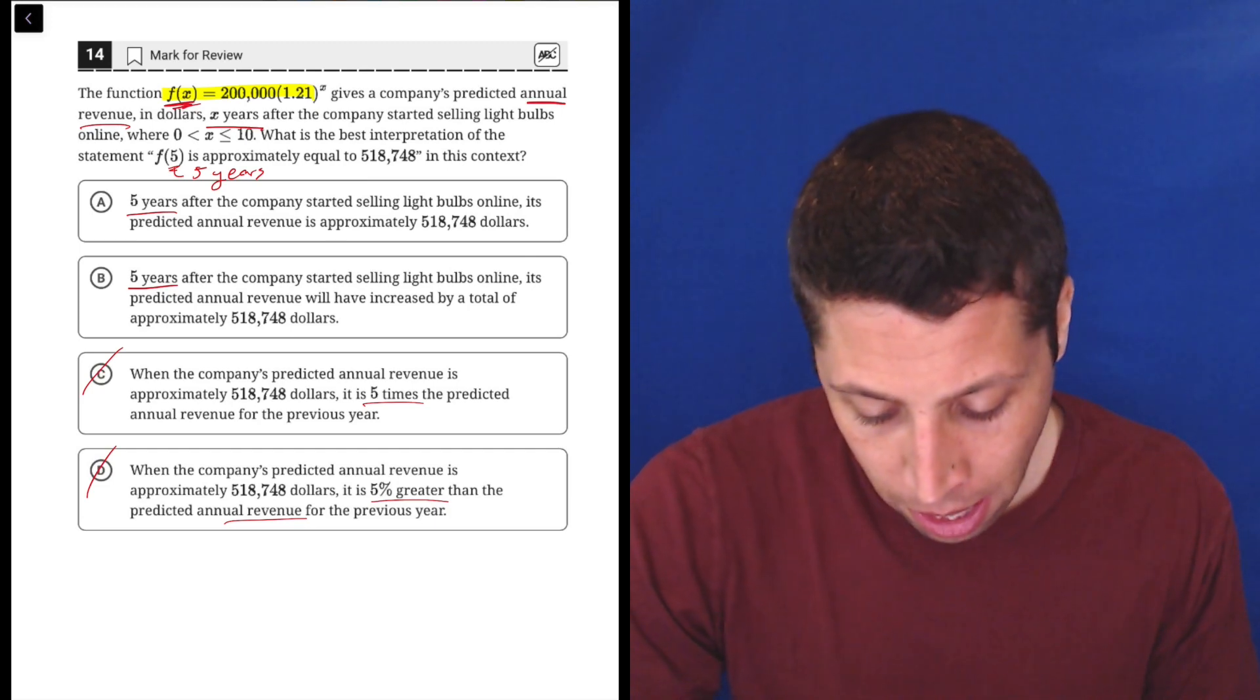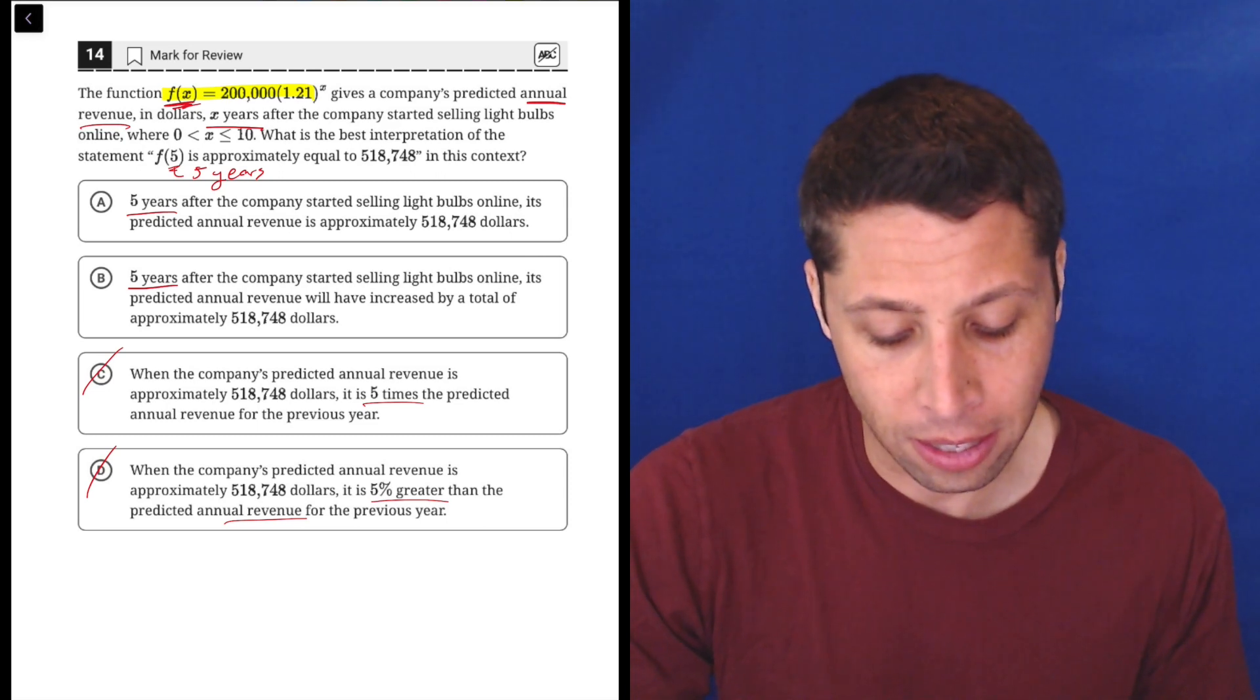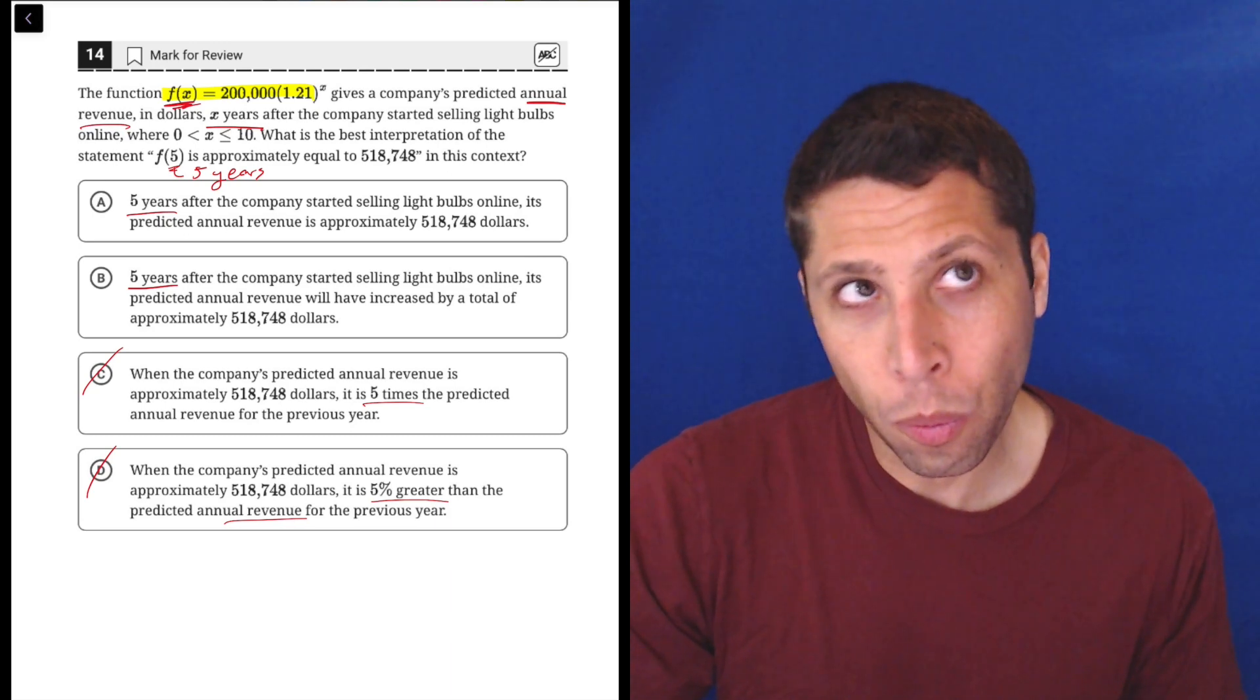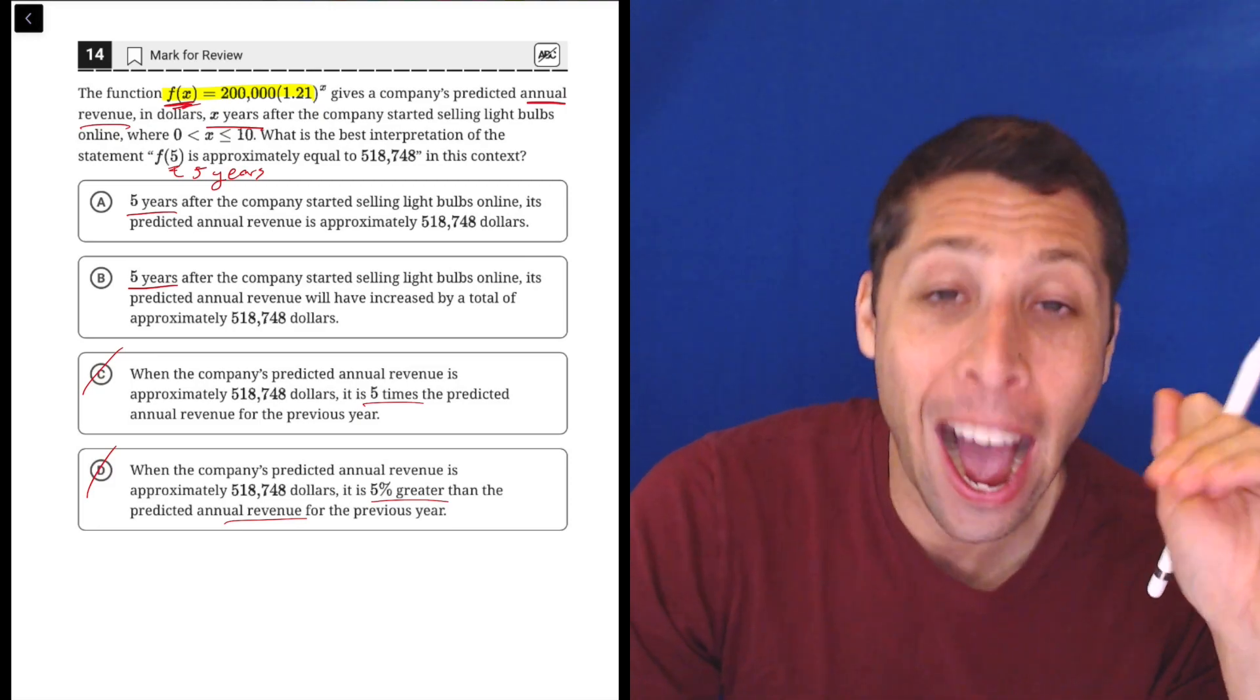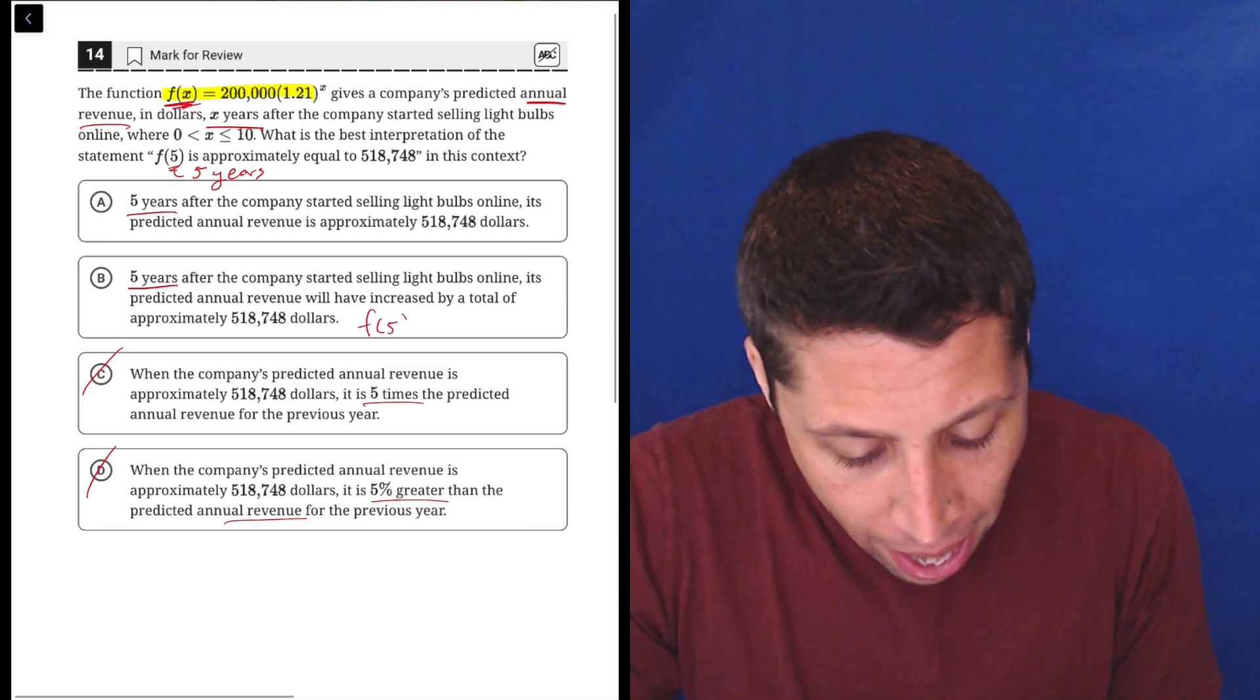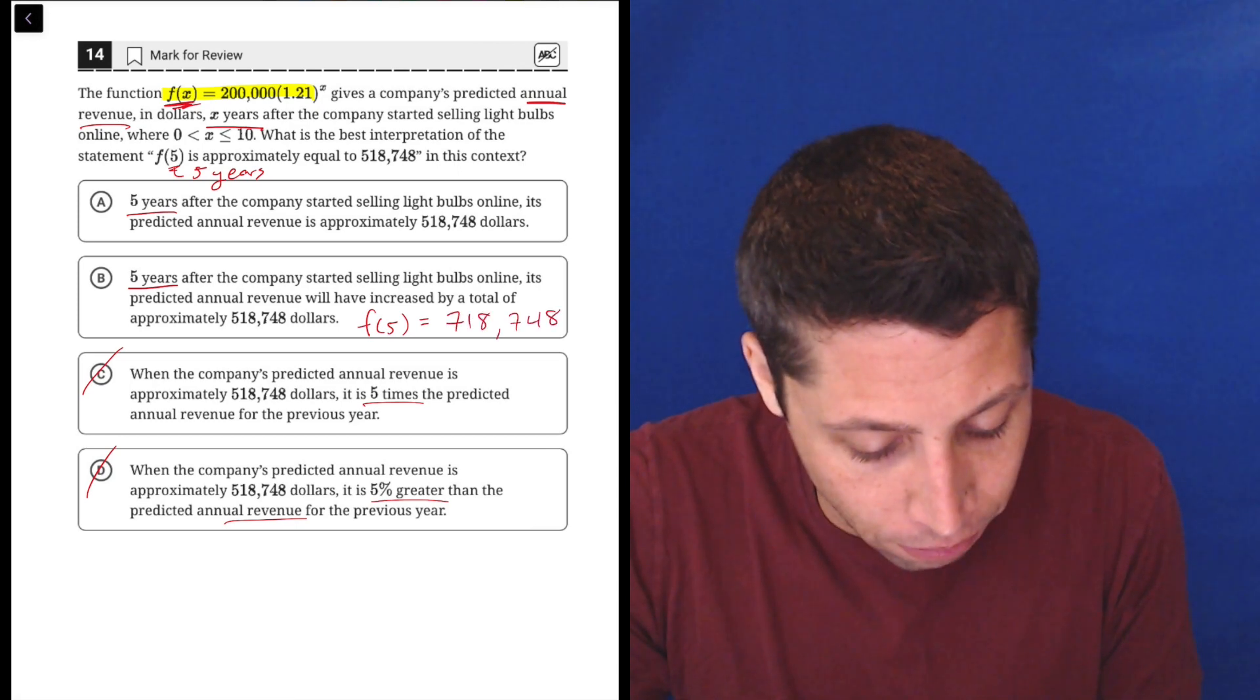Let's look at choice B. Five years after the company started selling light bulbs online, its predicted annual revenue will have increased by a total of approximately $518,748. Now that is not true because we are getting the point out. So if it were the case that B were true, then what would happen is f of five would be equal to 718,748.